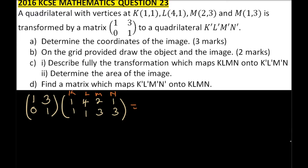For the first column: 1 times 1 is 1, plus 3 times 1 is 3, so you get 1 plus 3 equals 4. For the second column: 1 times 4 is 4, plus 3 times 1 is 3, so when you add that you get 7. For the third column: 1 times 2 is 2, plus 3 times 3 is 9, so you get 11. Then 1 times 1 is 1, plus 3 times 3 is 9, so 1 plus 9 gives you 10.